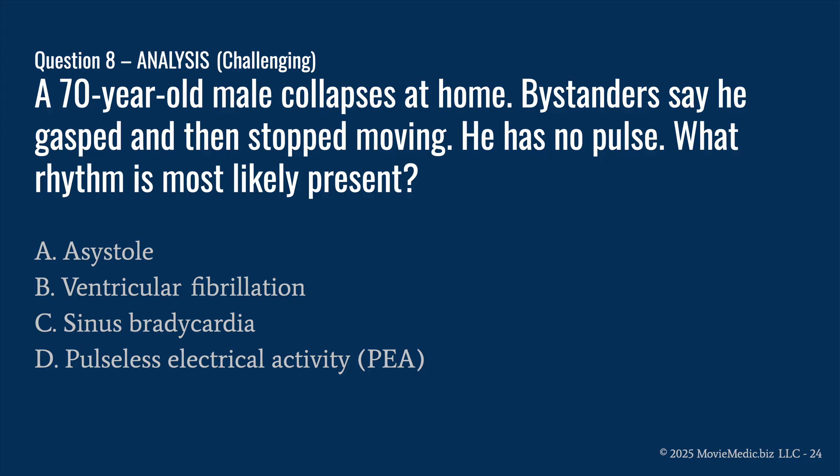Question eight. A 70-year-old male collapses at home. Bystanders say he gasped and then stopped moving. He has no pulse. What rhythm is most likely present? A: Asystole. B: Ventricular fibrillation. C: Sinus bradycardia. Or D: Pulseless electrical activity, or PEA.